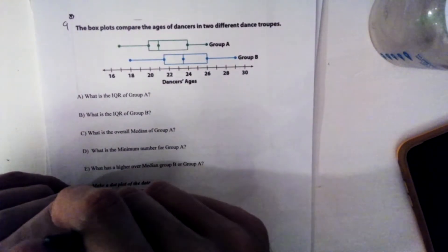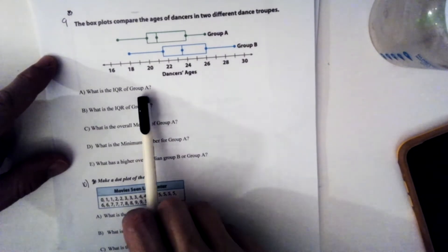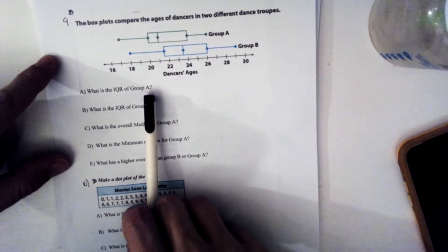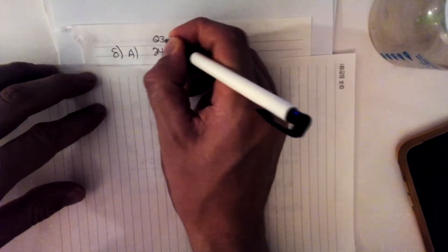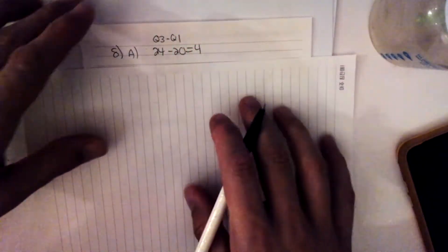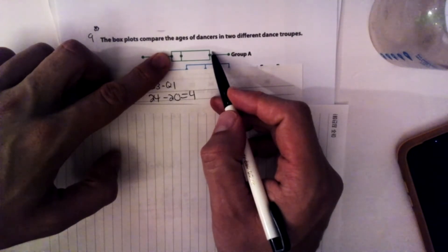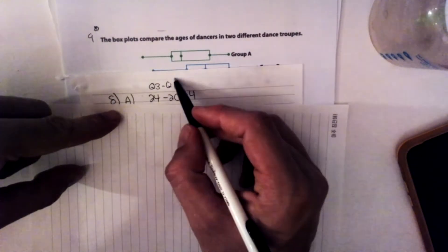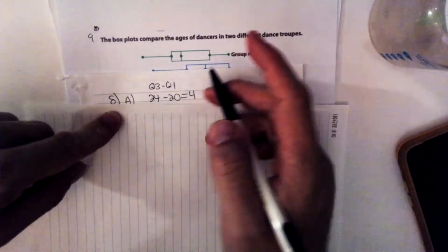The box plot compares the ages of dancers in two different dance troops. Let's answer a few questions. What is the IQR of group A? Pause the video and try this on your own. The IQR is Q3 minus Q1. We're literally minusing the inside ranges of the boxes. The IQR. And when you subtract Q3 from Q1, you get four. So my inner quartile range is four.